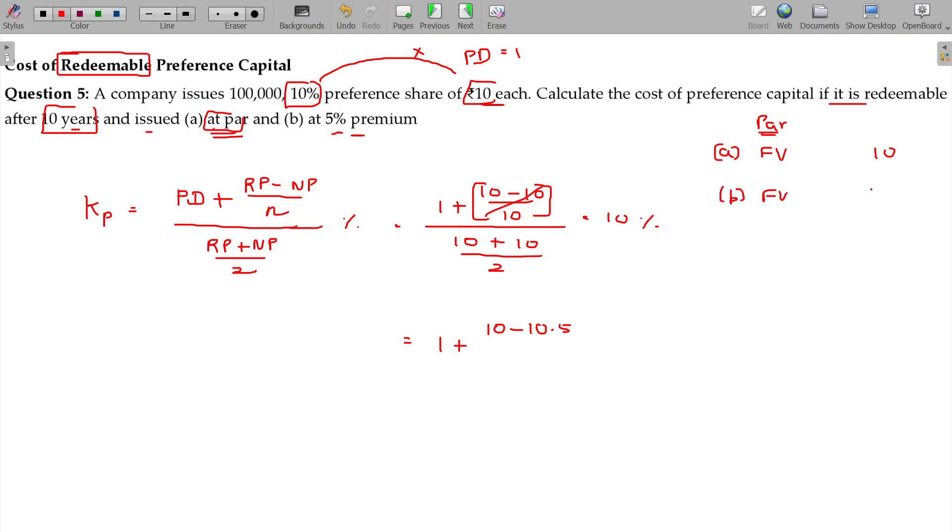Face value being 10, premium on issue is 0.5, so I am getting 10.5. This will be amortized over the 10-year period.